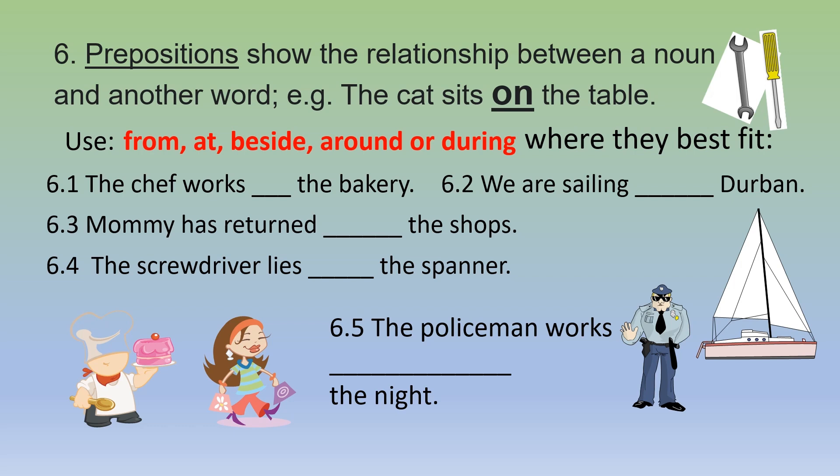Six: prepositions show the relationship between a noun and another word. For example, the cat sits on the table — so 'cat' and 'table' are in relationship. Use from, at, beside, around or during where they best fit. Remember, if you want to use 'at' two times, you should replace it once with another word. The chef works at the bakery. We are sailing around Durban. Mummy has returned from the shops. The screwdriver lies beside the spanner. The policeman works during the night.